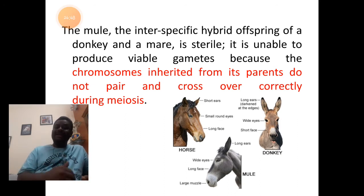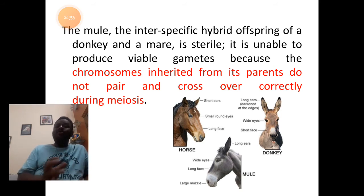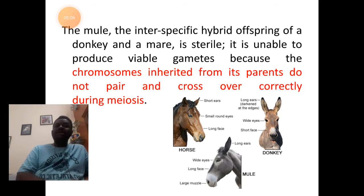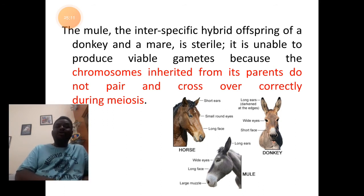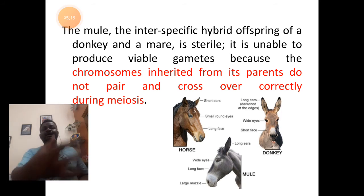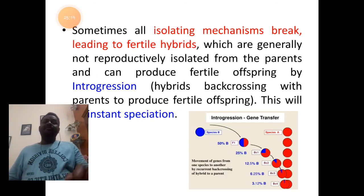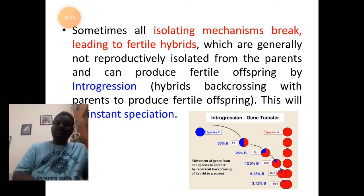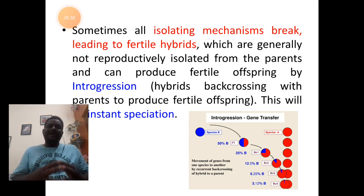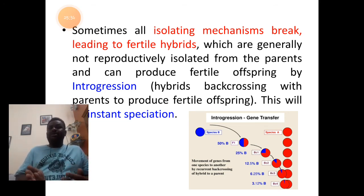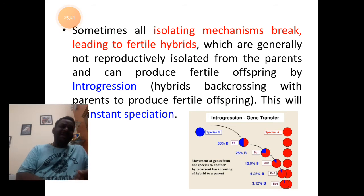Both mule and hinny are sterile organisms which show the difference in chromosome number. The chromosomes inherited from their parents do not pair and cross correctly during the process of meiosis, thereby the resultant product will be either mule or hinny. These sterile organisms cannot reproduce new individuals in the population — that is about hybrid sterility.